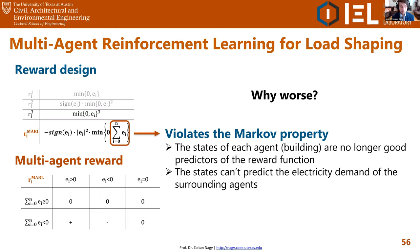The Markov property essentially states that if the states are no longer good predictors of the reward function, the RL agent won't be able to perform well because it doesn't understand why the system is doing what it does. Initially with the single-agent reward, the reward depended only on each building's own electricity consumption, and the states were designed to predict that — so there was no issue. But now the same states designed to predict individual building consumption are being used to also predict the whole district's energy consumption, and they are not good predictors of that, causing the agent to underperform.